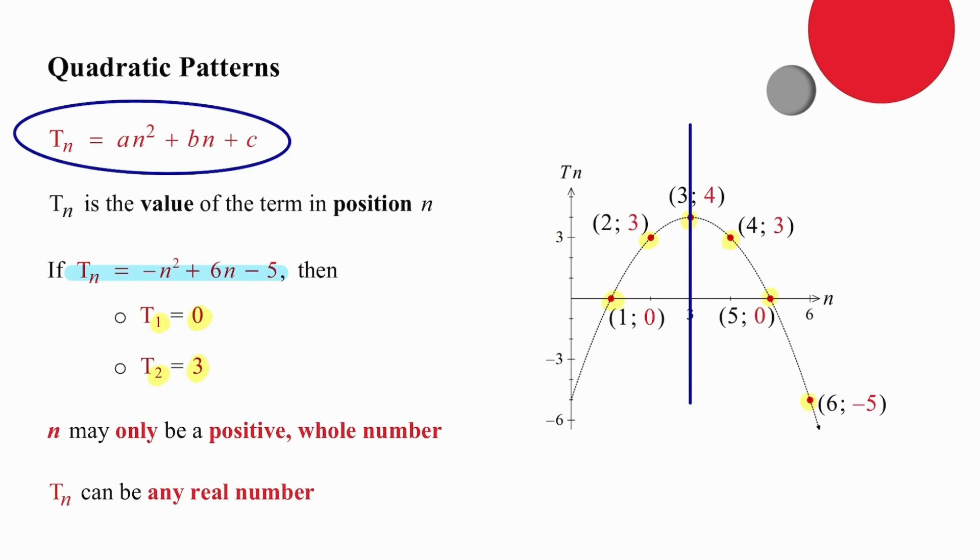A quadratic pattern has a symmetry line. Secondly, this particular quadratic pattern has a maximum value because the coefficient of n squared is negative. Also important to notice in a pattern, particularly in this quadratic pattern, is the fact that n can only be a positive whole number. It cannot be negative, nor can it be a fraction.